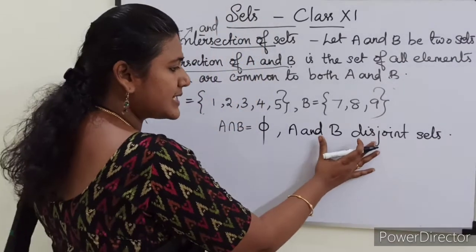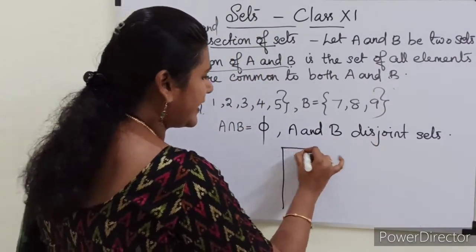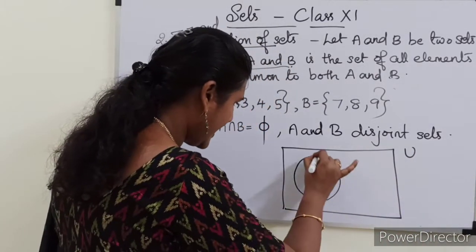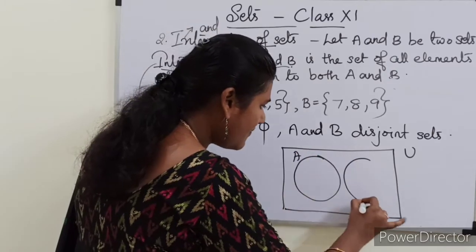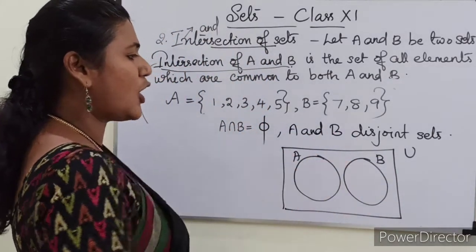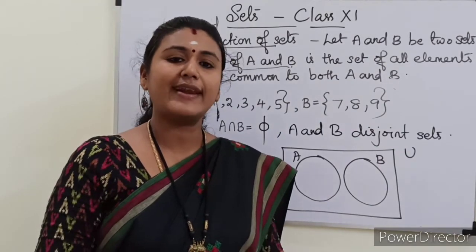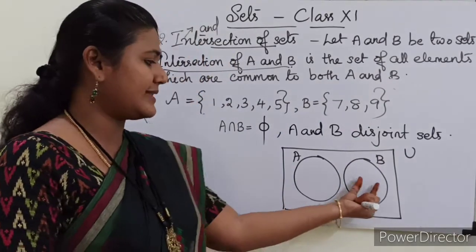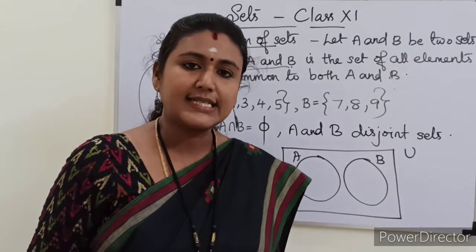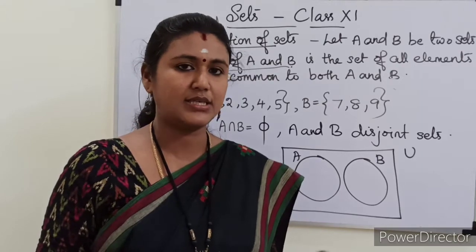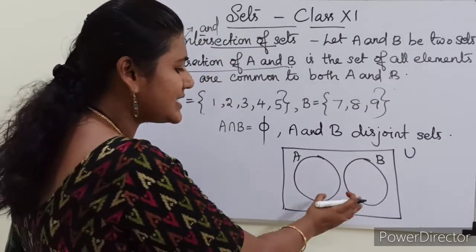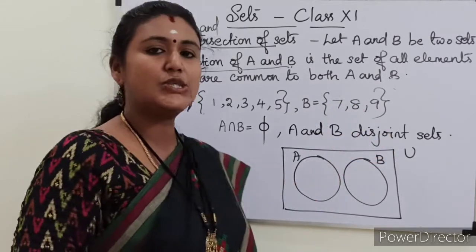So here if the intersection of two sets is the null set, then we can call these two sets as disjoint sets. If two sets are disjoint sets, then their intersection will be the null set — that means no common elements for the two sets. To represent disjoint sets in a Venn diagram, we draw the universal set and both A and B as two separate circles with no overlapping.